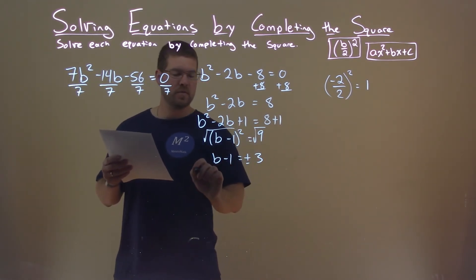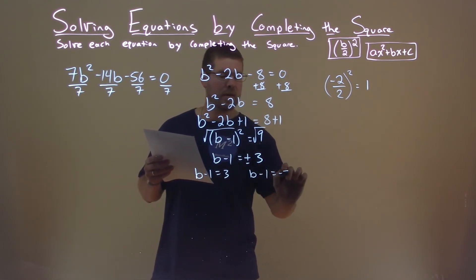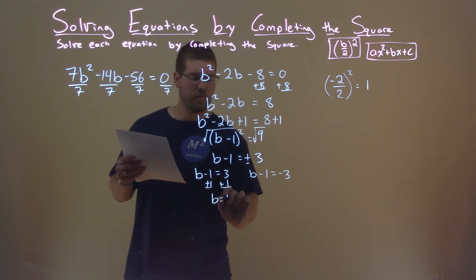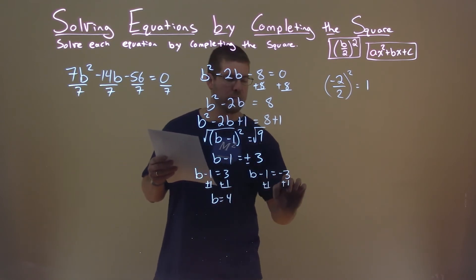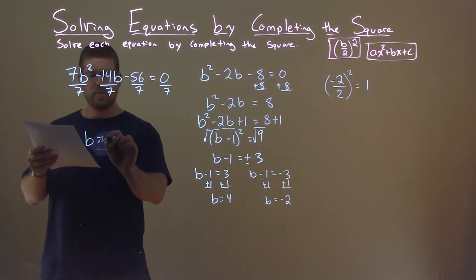We can break this down into two equations now. b minus 1 equals a positive 3, and b minus 1 equals a negative 3. Add a 1 to both sides, b equals 4. Do it again here, and b equals a negative 2. And so our two solutions here are b equals 4 and negative 2.